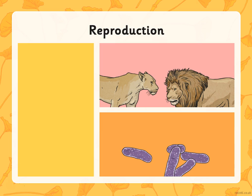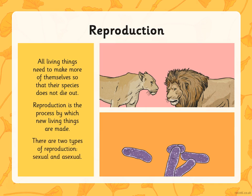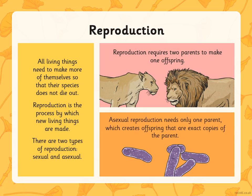Before we begin, let's have an overview of reproduction. All living things need to make more of themselves so that their species do not die out. Reproduction is the process by which new living things are made. There are two types of reproduction: sexual and asexual. Sexual reproduction requires two parents to make one offspring, whereas asexual reproduction needs only one parent, which creates offspring that are exact copies of the parent.